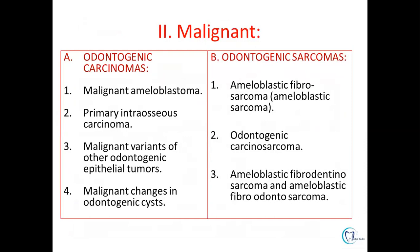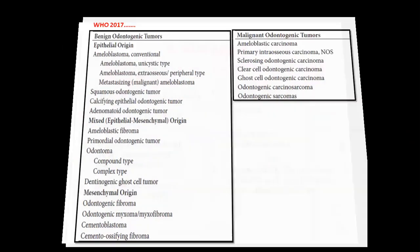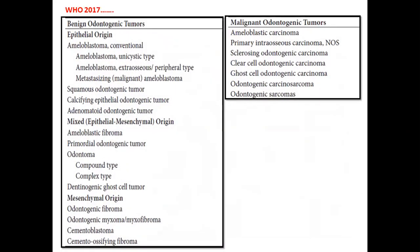The malignant category was further subdivided into odontogenic carcinomas and odontogenic sarcomas. In 2017, WHO reclassified the tumours into two broad categories: benign and malignant. The benign was simplified into three broad categories: tumours of epithelium origin, those of mesenchymal origin, and a third mixed origin category involving epithelial-mesenchymal interactions. The adenomatoid odontogenic tumour in 2017 was reclassified into the category of benign odontogenic tumours of epithelium origin.